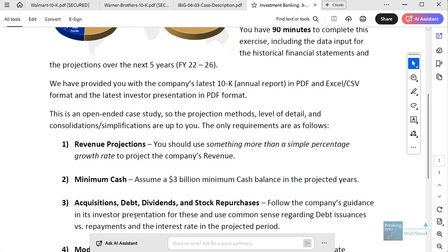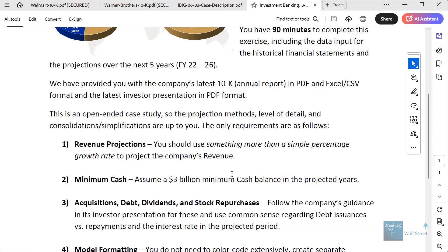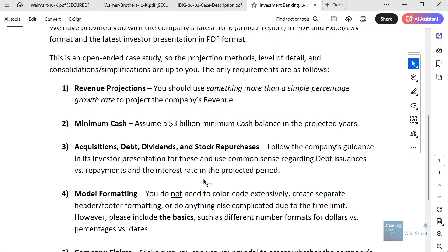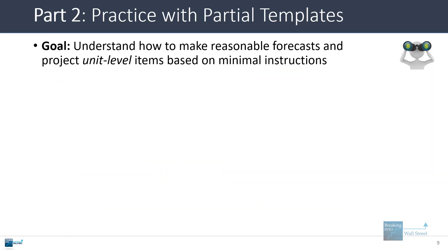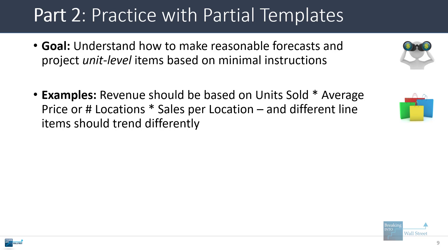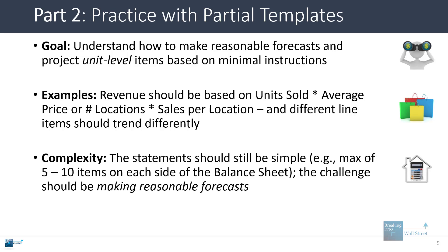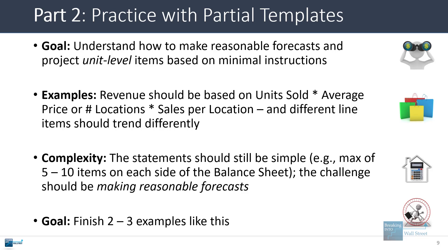They tell you to look at the company's guidance and investor presentations but don't give you specific numbers — that's the whole point. You want to learn how to make reasonable forecasts on your own. Revenue should be based on units sold times average selling price, or number of locations times sales per location. Different line items should trend differently — some with number of locations, others with total revenue. You still want companies with relatively simple statements, maybe five to ten items on each side of the balance sheet. Focus on making reasonable forecasts, not on overly complicated statements. Try to do at least two to three examples with these partial templates.